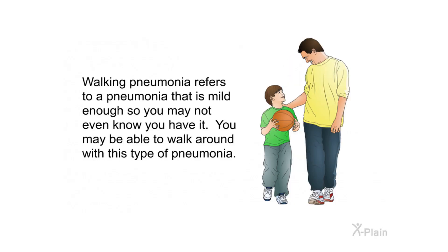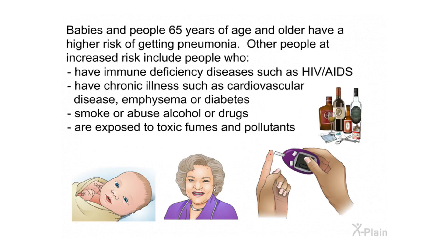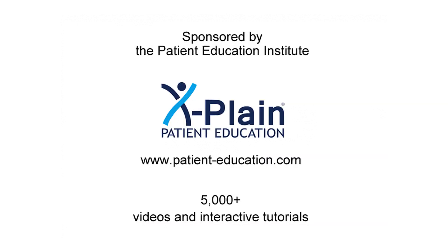Walking pneumonia refers to a pneumonia mild enough that you may not even know you have it — you may be able to walk around with this type. Babies and people 65 years of age and older have a higher risk of getting pneumonia. Other people at increased risk include those who have immune deficiency diseases such as HIV or AIDS, chronic illnesses such as cardiovascular disease, emphysema, or diabetes, those who smoke or abuse alcohol or drugs, or are exposed to toxic fumes and pollutants.